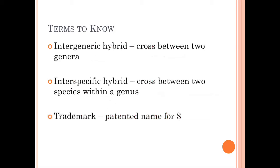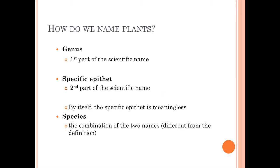We occasionally see intergeneric hybrids, a cross between two different genera. Doesn't happen very often. That's basically like a maple and an oak breeding together. So they really have to be closely related. It does happen occasionally, but not very often. What does happen a little more often is an interspecific hybrid, a cross between two species within a genus. So a maple and a maple hybridizing. An oak and an oak hybridizing. And while we're not going to pay a whole lot of attention to them in this class, we do have trademarks, patented names for money, so that the companies that invent these plants can make money off of their inventions.